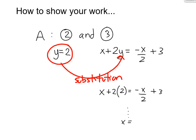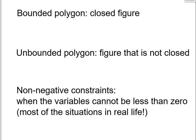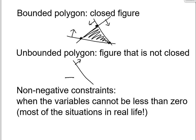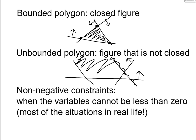A few more definitions you might need. When we do our polygons, sometimes it's going to be bounded — a closed figure. For example, if you have three inequalities that bound a region on all sides, that's called a bounded polygon. But if the inequalities create a region that opens up and doesn't close, then it's called an unbounded polygon — a figure that is not closed.